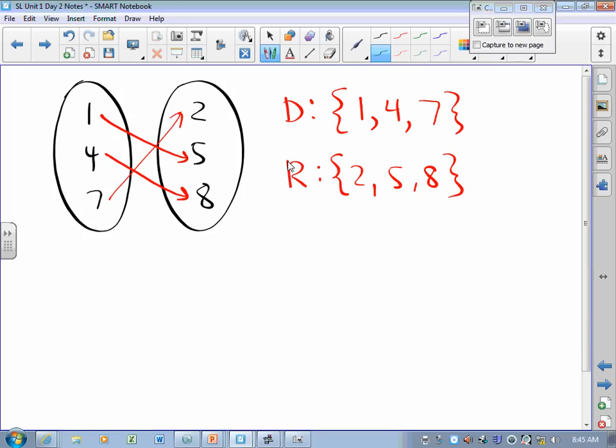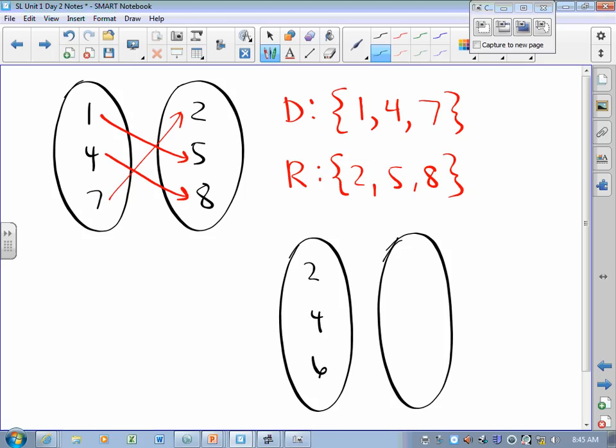Quick side note. Say I've got {2, 4, 6} and {1, 3, 5, 7}, where 2 maps to 5, 4 maps to 3, and 6 maps to 5. That's a function.